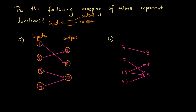If we put 4 into this mapping it says we get out 12 — a single input and a single output. Now both 3 and 4 map to 12, but that's fine — a function can have that property. Inputting 3 into our little box gives a single output of 12, and inputting 4 also gives 12.